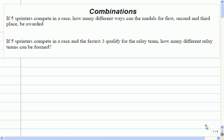So let's take a look at these questions. The first one says, if five sprinters compete in a race, how many ways can the medals for first, second, and third place be awarded? Well, let's think about this. If we're not sure and we want to go back all the way to basics, we can do the fundamental counting principle. How many choices am I making here? I'm making three choices, right? I'm going to have to choose someone for first, second, and third place.